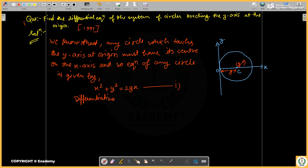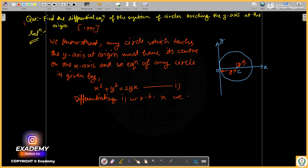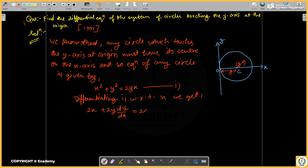Differentiating first with respect to x, we get: 2x plus 2y times dy/dx. Here g is constant because g represents the radius, so it gives a constant value.